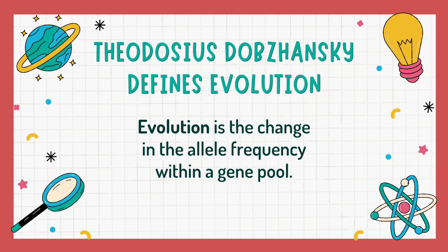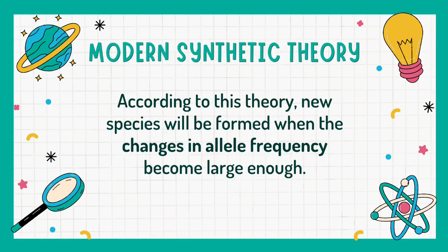In his book, Dobzhansky defines evolution as the change in the allele frequency within a gene pool. According to their theory, new species will be formed when these changes in allele frequency become large enough.